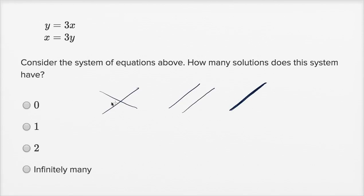So we can immediately rule out two solutions, because these are linear equations. The only way you're going to have two solutions is if at least one of these lines curved. So if one of them did something like this, then you could have two solutions right there and right there. But these are both linear equations, so we can rule out having two solutions.